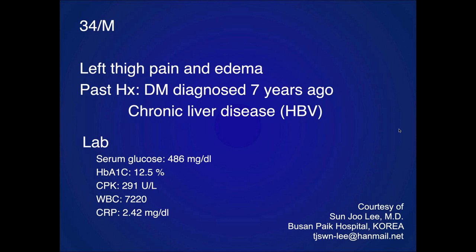A 34-year-old male presents with left thigh pain and edema. He has a history of diabetes and chronic liver disease. Labs are notable for really high glucose, really high A1C, elevated CPK. White count is 7,000 and CRP is elevated.